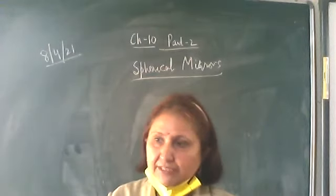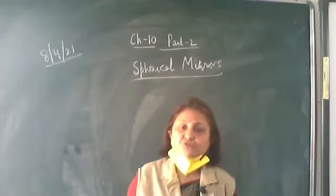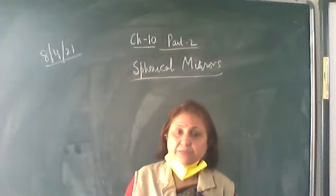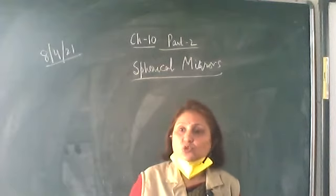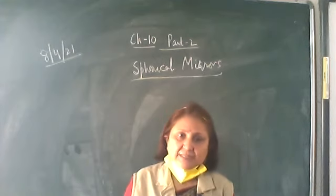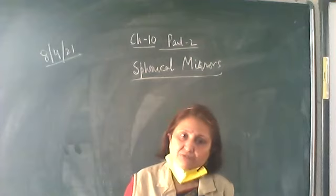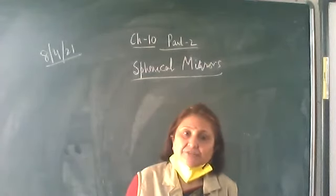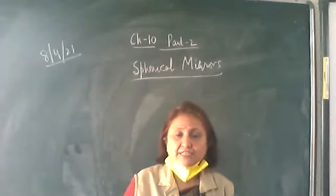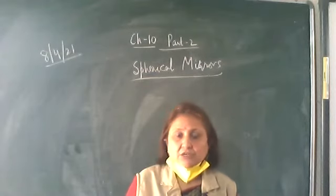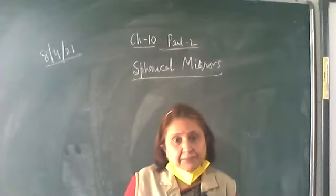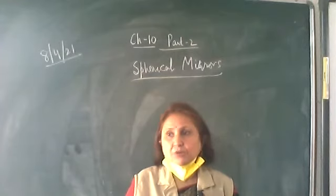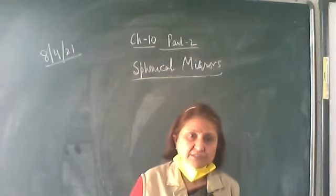The properties we studied — yesterday we studied four properties of the image formed by a plane mirror. The first property: the image formed is virtual and erect. Virtual images means the reflected rays do not actually meet — they appear to meet. Such images we call virtual images, and virtual images are always erect. Also, the size of the image is the same as that of the object — the size of the object and the size of the image are equal. The third property: the image is found as far behind the mirror as the object is in front of it — that is, the object distance equals the image distance.